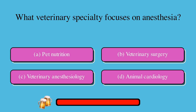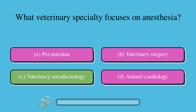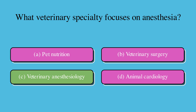What veterinary specialty focuses on anesthesia? A. Pet nutrition, B. Veterinary surgery, C. Veterinary anesthesiology, or D. Animal cardiology. The correct answer is C. Veterinary anesthesiology.